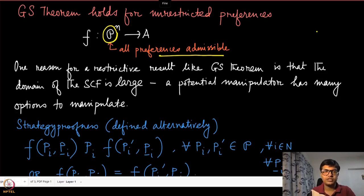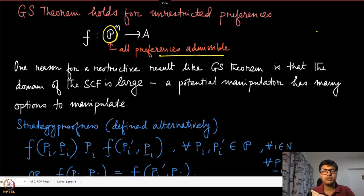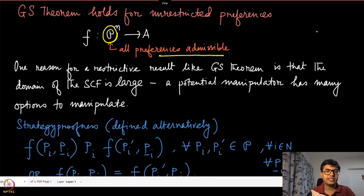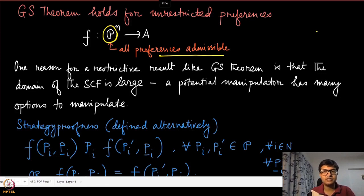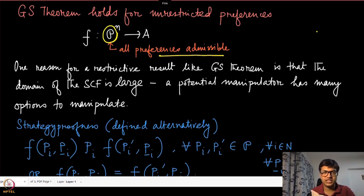In this module and in subsequent modules, we will discuss some of these domains which are strict subsets of script P, which we call domain restrictions. That is exactly the area of research where a lot of social choice functions start giving interesting results that are non-dictatorial and also satisfy at least the two properties of onto-ness and strategy-proofness.